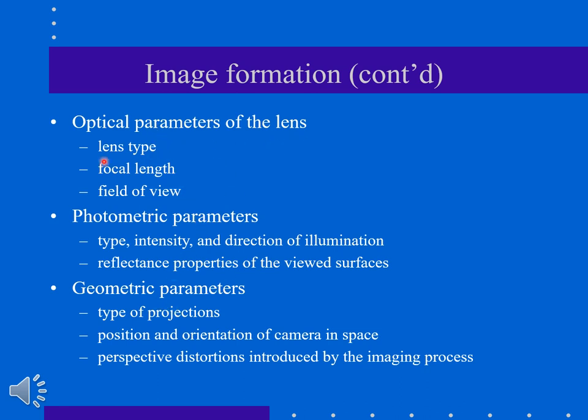Image formation involves optical parameters - the lens type (concave or convex), the focal lengths depending on the geometry of the lens, how far f is from the center of it, the field of view. The photometric parameters are the type, intensity, and direction of illumination and reflectance properties of the surface. And the geometrical parameters are the type of projection, position and orientation of the camera, and perspective distortion introduced by the image processing.